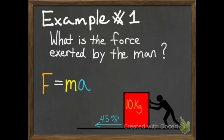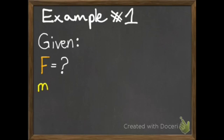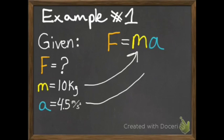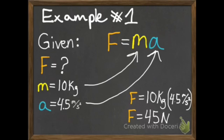We have 10 kilograms, we have 4.5 meters per second squared, and we have a hint in the problem because it says 'what is the force?' So, we set up our given information: we do not know the force; we know the mass of the box is 10 kilograms, and we know the acceleration is 4.5 meters per second squared. We already have our equation solved for F, so we don't need to rearrange anything. All we need to do is plug in our 10 kilograms for the mass, plug in 4.5 meters per second squared for the acceleration, and multiply. We get an answer of 45 newtons.